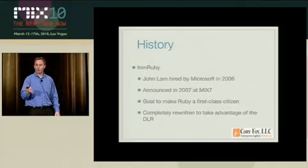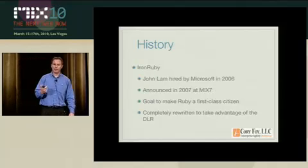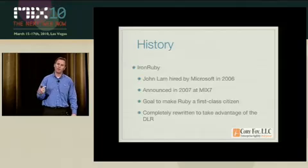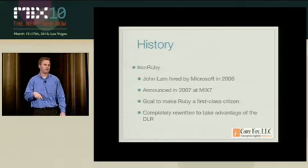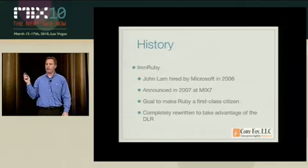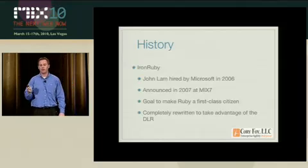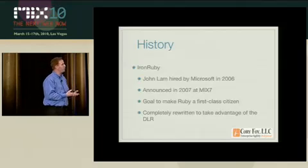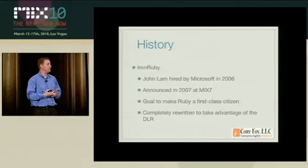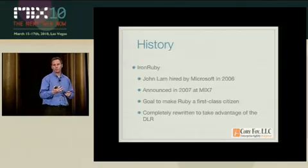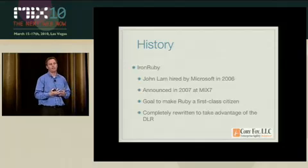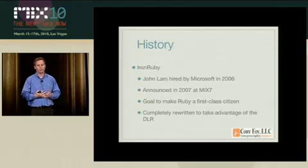IronRuby was founded by John Lamb. He was hired by Microsoft in 2006, and they announced IronRuby in 2007. The goal was to make Ruby a first-class citizen, and he rewrote his Ruby CLR project from scratch to take advantage of the DLR.